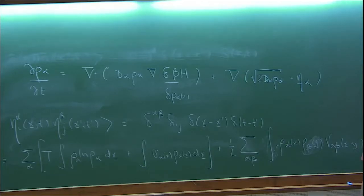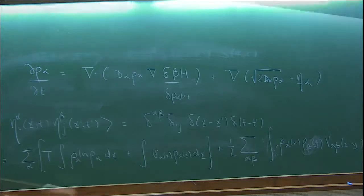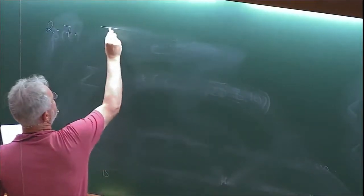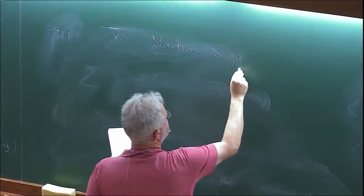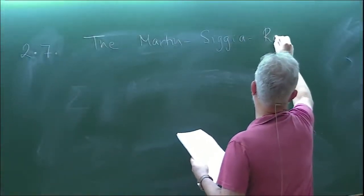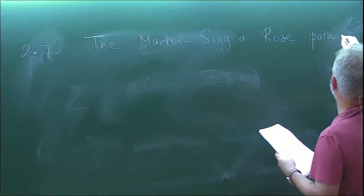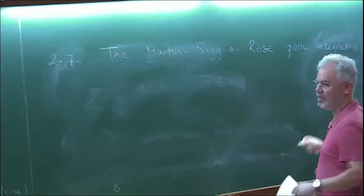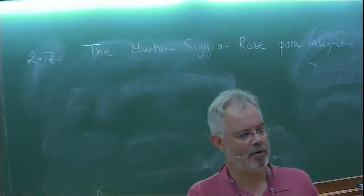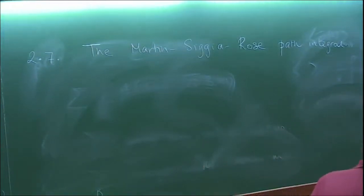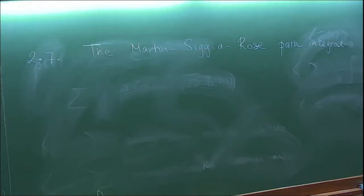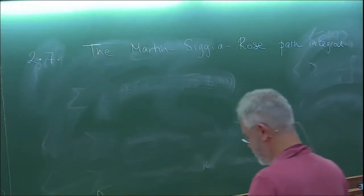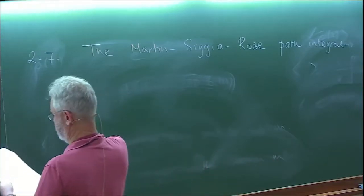I want to talk about the Martin-Siggia-Rose (MSR) path integral. If you have a random variable, you have a probability distribution, and I might want to know the probability distribution of the field ρ at some time t. But formally I can also ask what the probability distribution of the entire path is. So let's go back to a discrete stochastic differential equation.